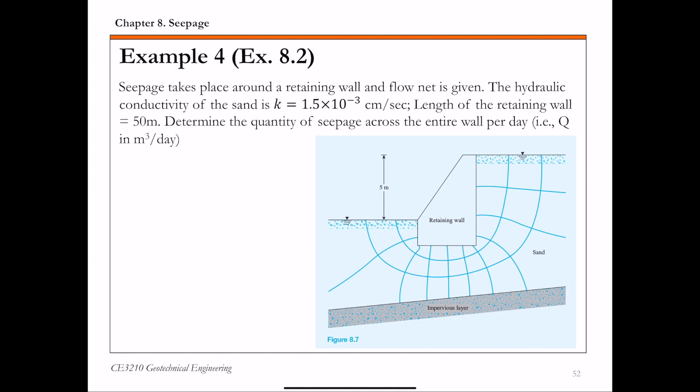The last example of this chapter, example 4, is the flow net around the retaining wall. The length of the retaining wall is 50 meters, so L equals 50 meters. You know the hydraulic conductivity and are asked to determine the total seepage quantity, capital Q.